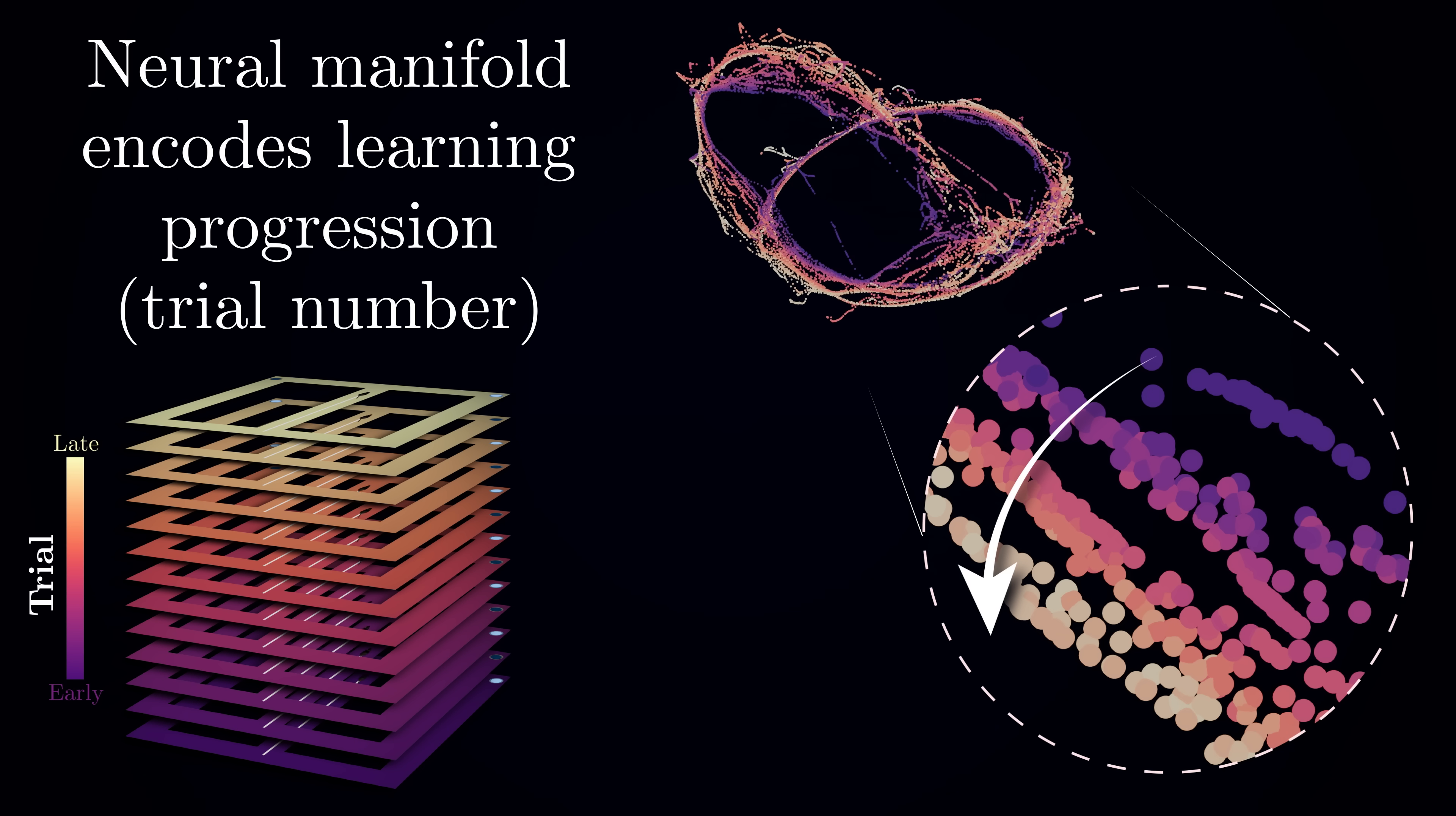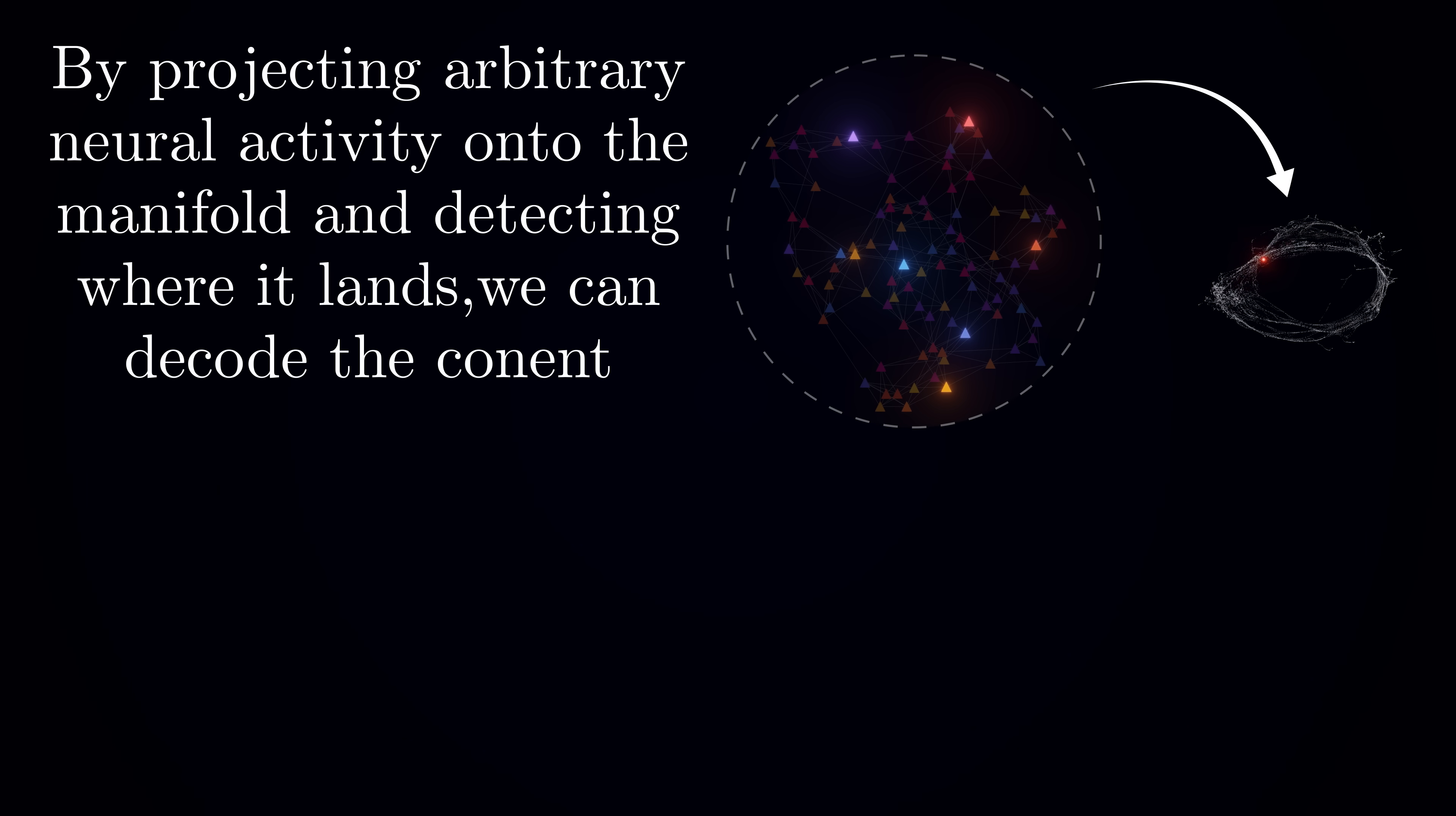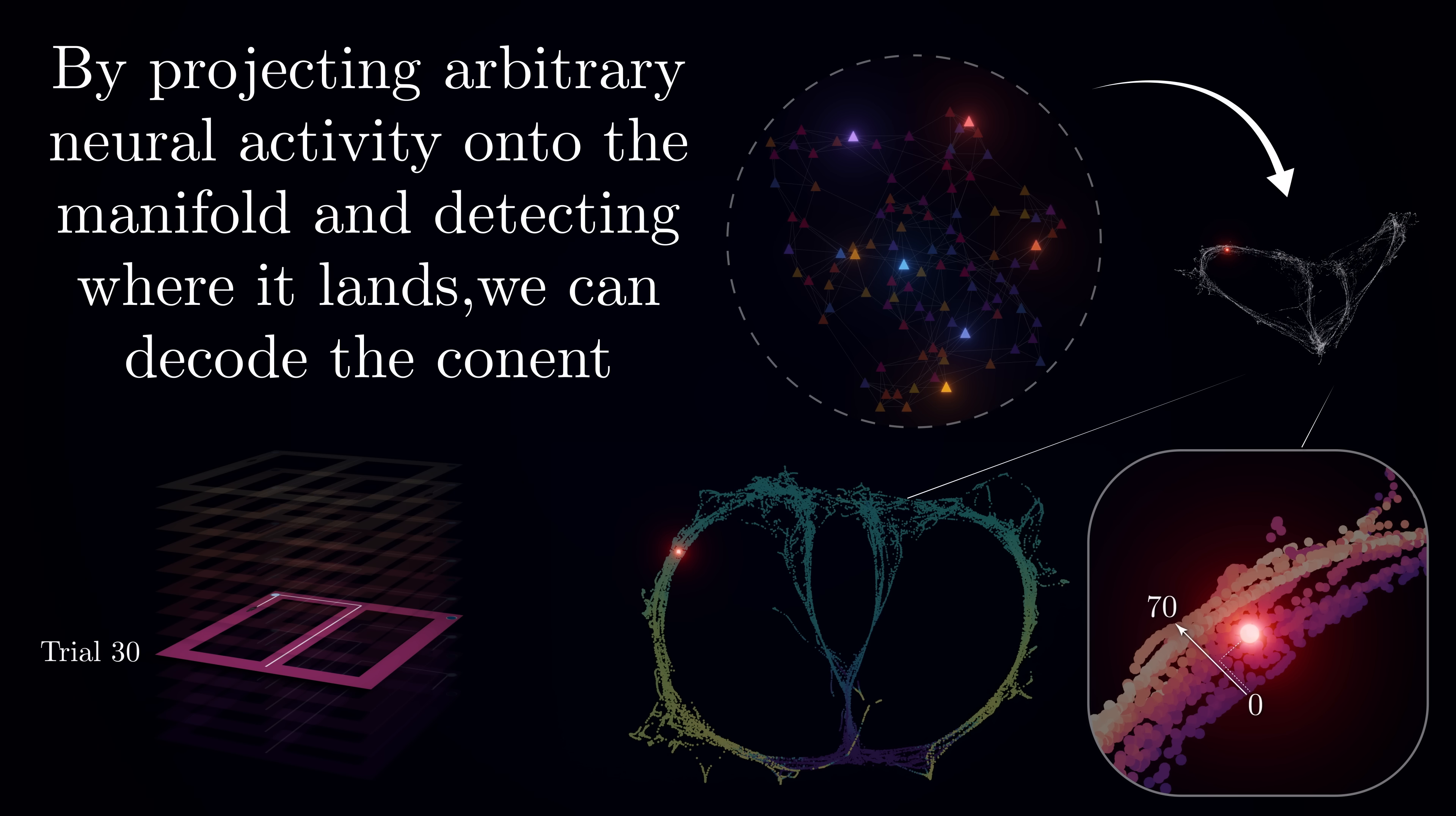This gives us a powerful tool. We can now map any pattern of neural activity onto this maze manifold and determine whether it resembles actual task-related activity. If it does, we can even try to identify which trial and position in the maze it corresponds to. As you might guess, this becomes crucial for decoding what information gets replayed and consolidated during sharp wave ripples.